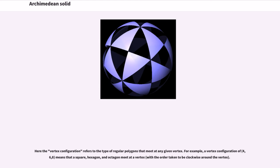Here the vertex configuration refers to the type of regular polygons that meet at any given vertex. For example, a vertex configuration of (4,6,8) means that a square, hexagon, and octagon meet at a vertex, with the order taken to be clockwise around the vertex.